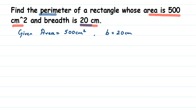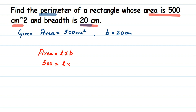The area formula for a rectangle is: area = length × breadth. We know the area is 500, so substituting: 500 = length × breadth. The breadth is given as 20, so substituting all values: 500 = length × 20. We need to find the value of L.